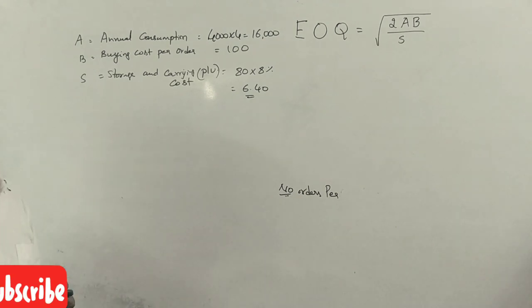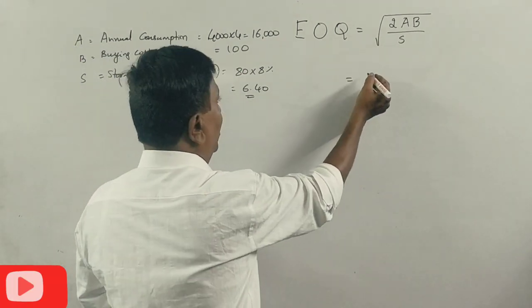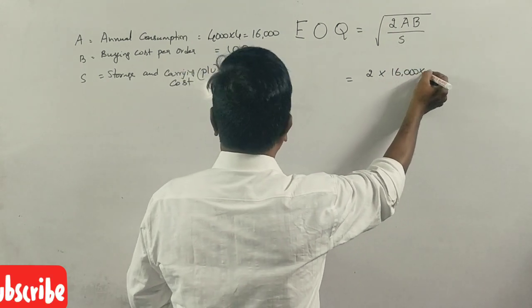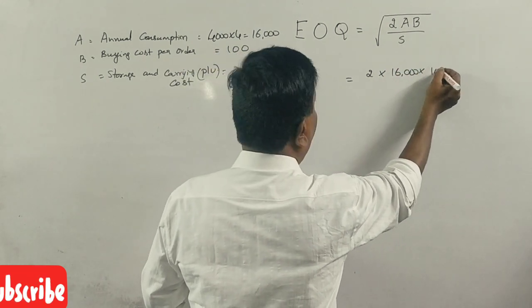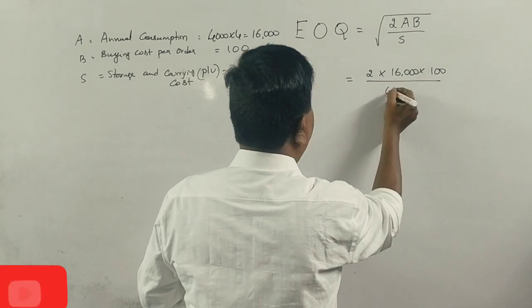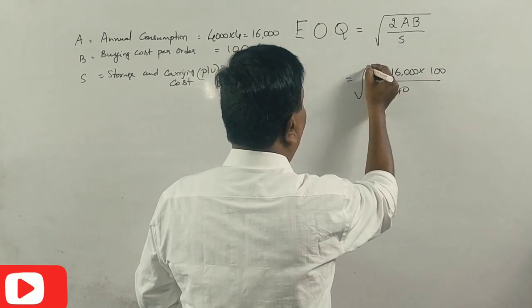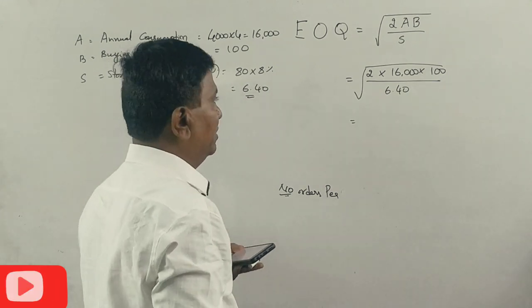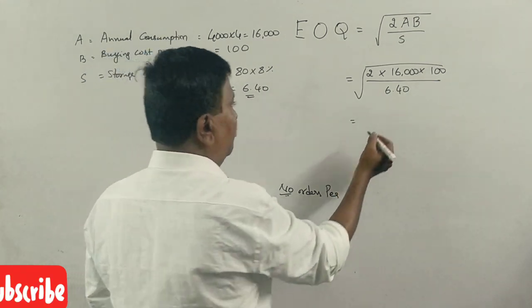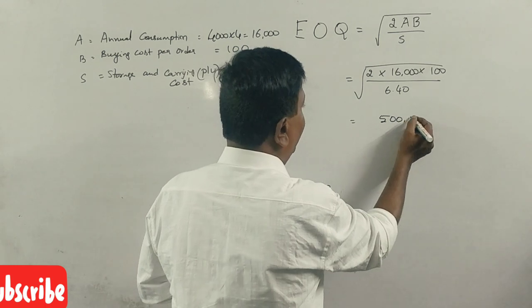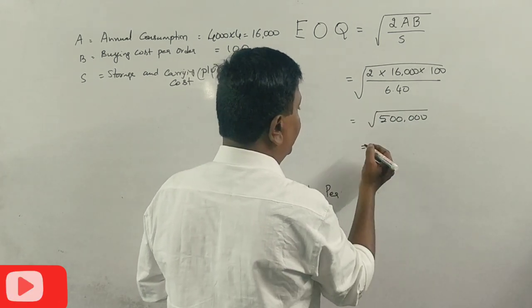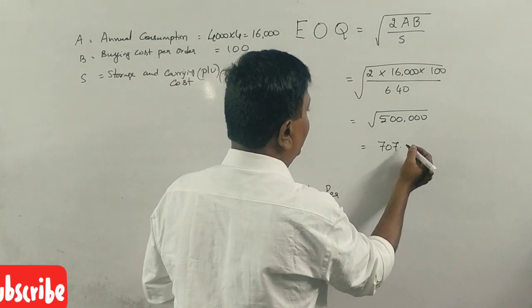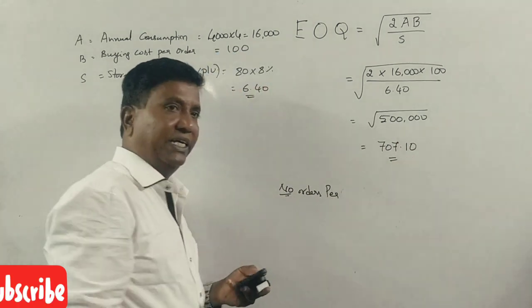The formula is: 2 into 16,000 into 100 divided by 6.40, whole root. This gives us 5 lakh. 5 lakh divided... the root of 5 lakhs is 707.10.